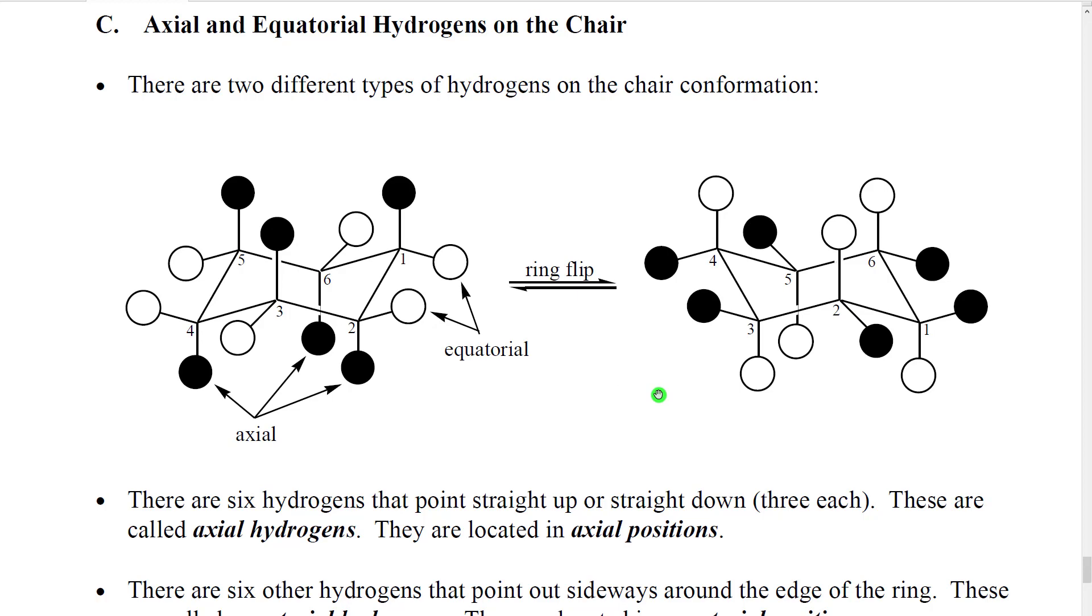The last thing I want to talk to you about on the chair is what happens to the other groups, the other bonds that are attached to the six carbons of the chair. It turns out when we build a chair, those groups align themselves in a way looking like this.